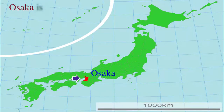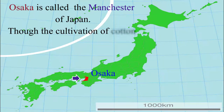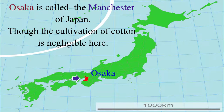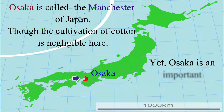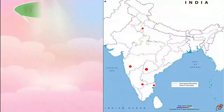Osaka is called the Manchester of Japan. Though the cultivation of cotton is negligible here, yet Osaka is an important textile center of Japan.